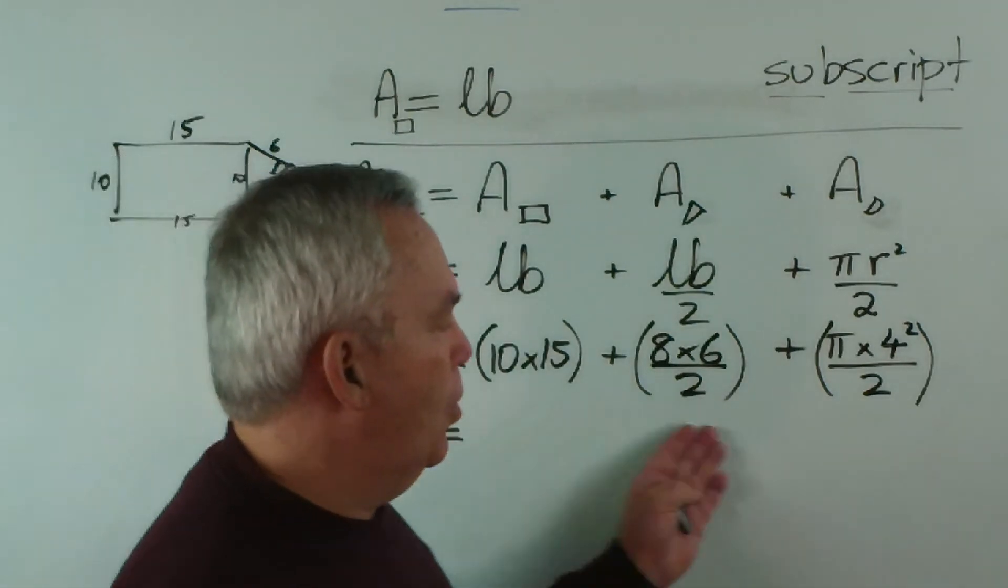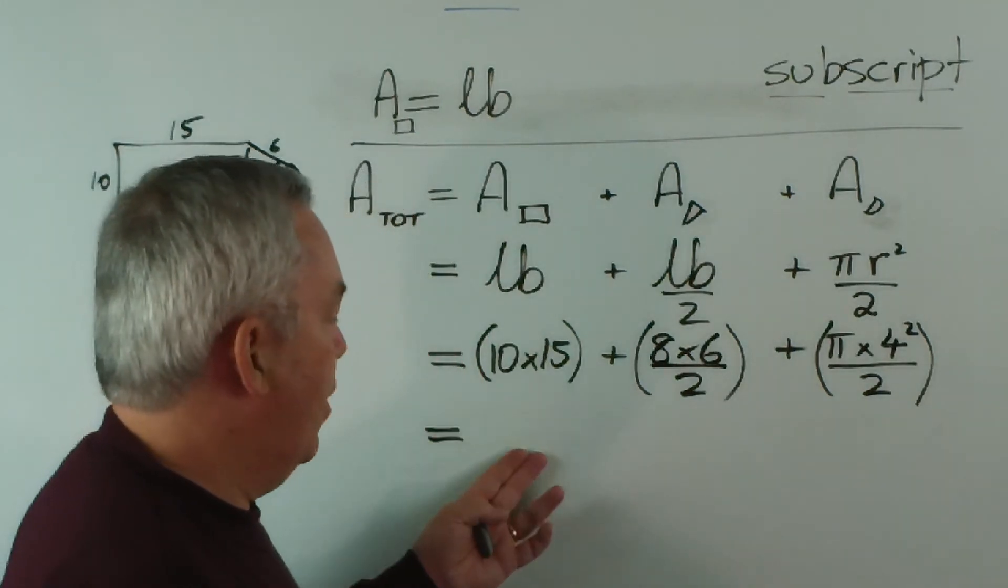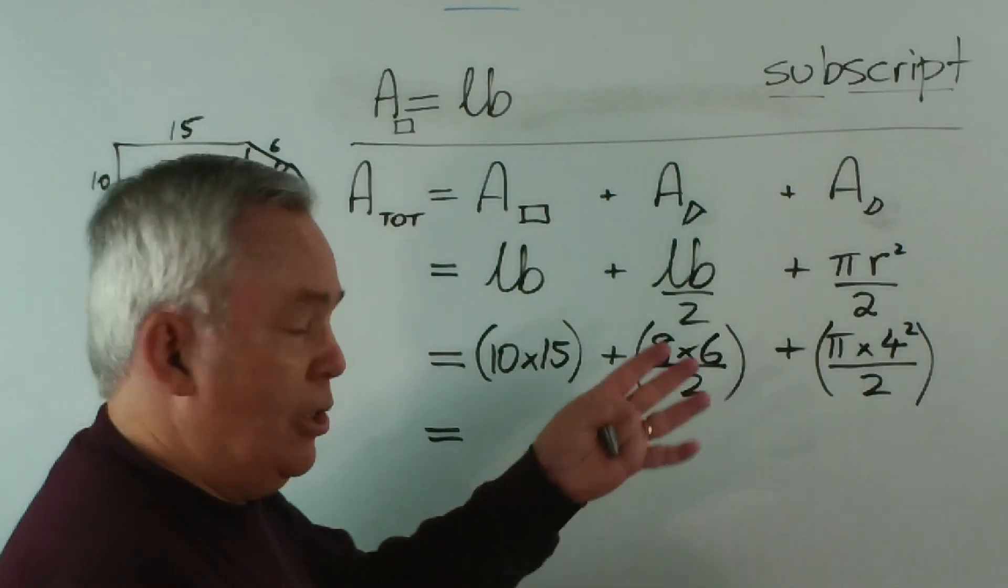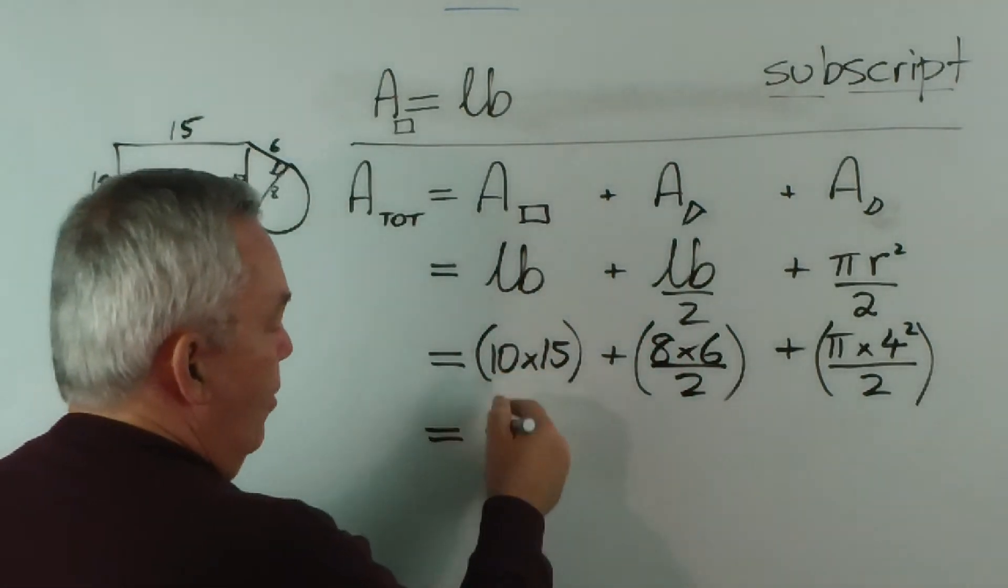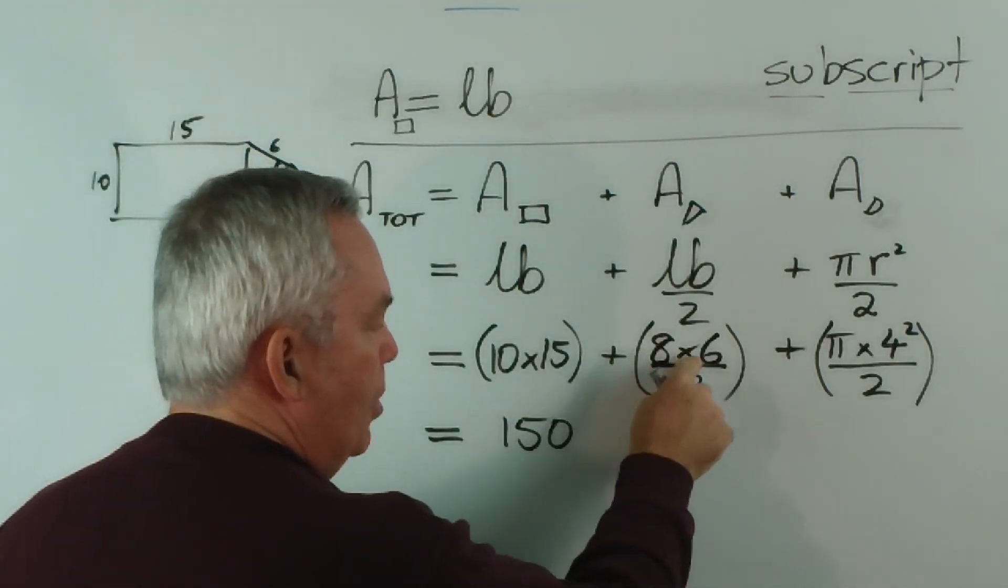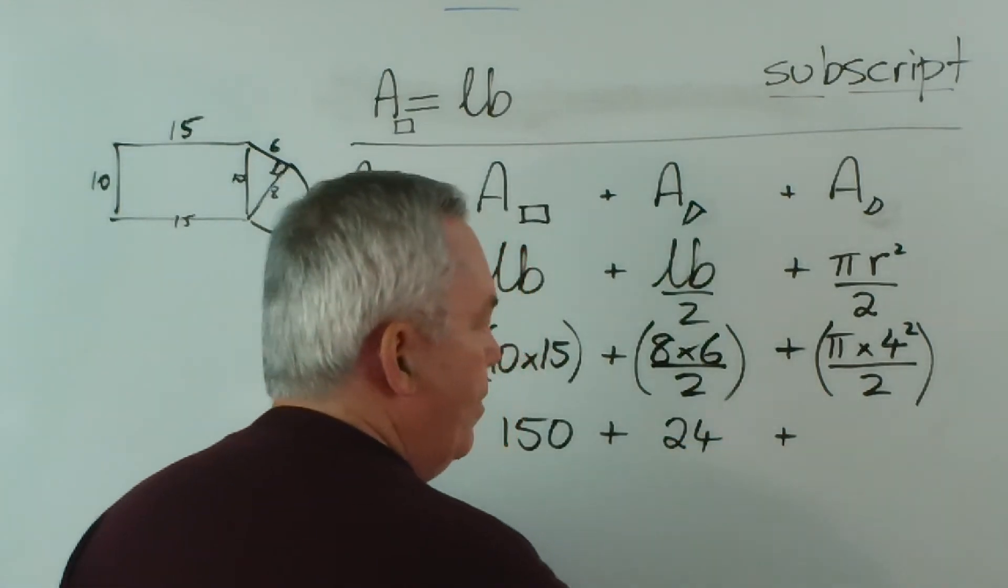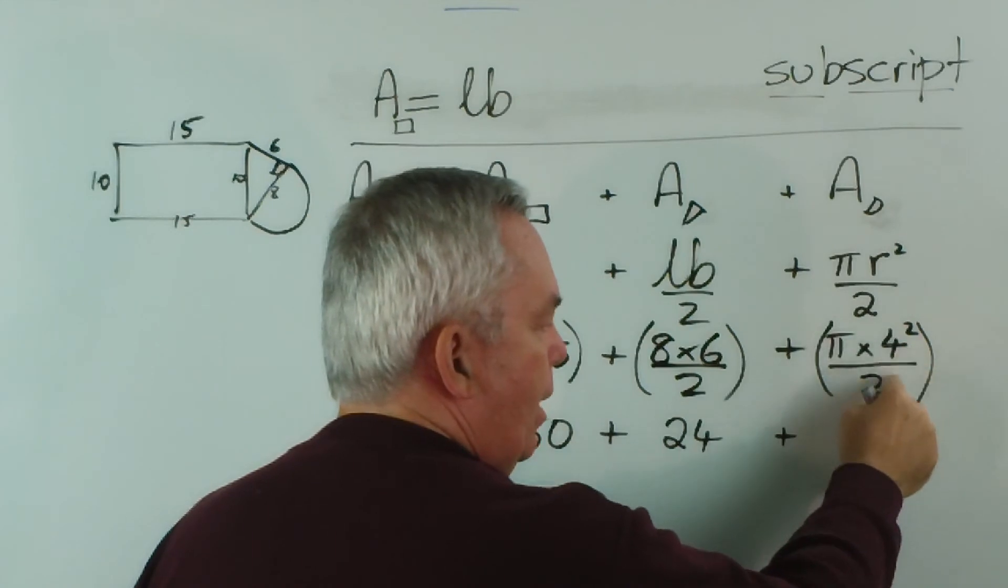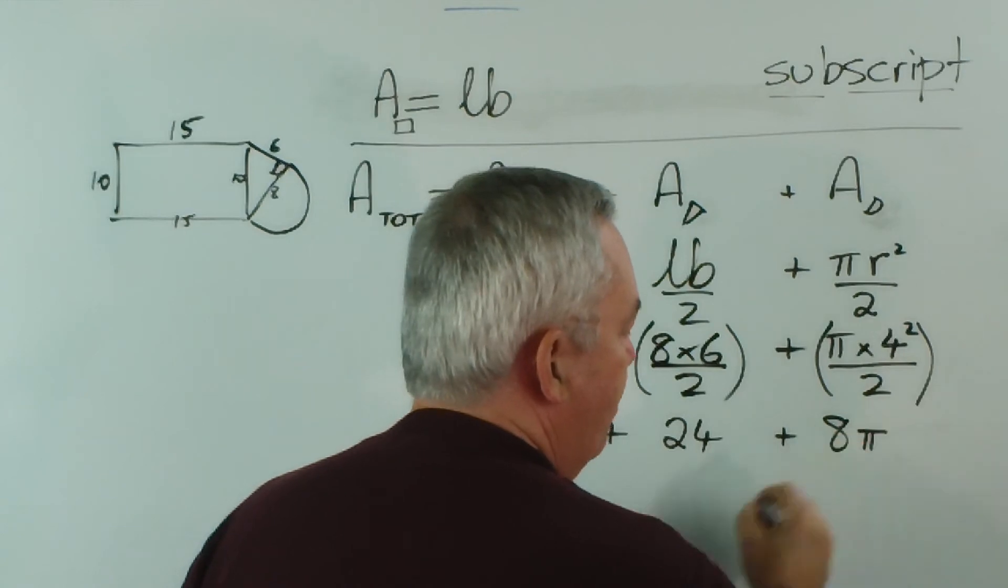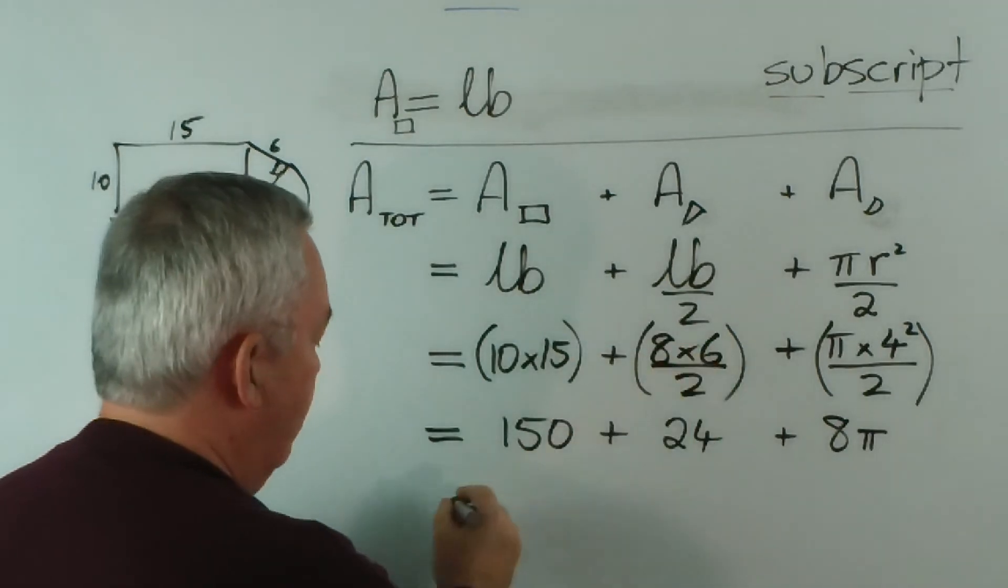Now at this stage you could put all of that into your calculator and get a complete answer. Or if you wished, you could find each part. Now I'm going to show each part. 10 by 15 is 150. Half of eight is four times six is 24. Four squared is 16, and half of 16 is eight, so it's pi times eight or eight pi. And we can put that in our calculator, it's a little bit easier than the rest.